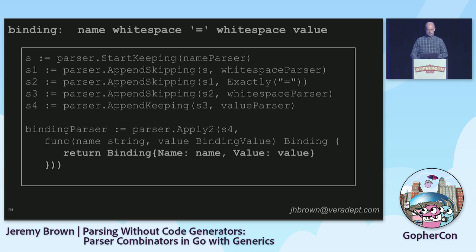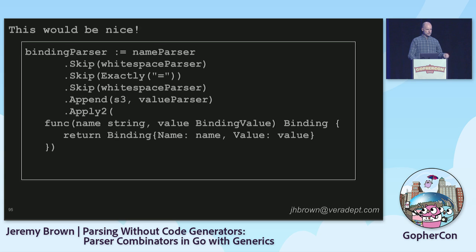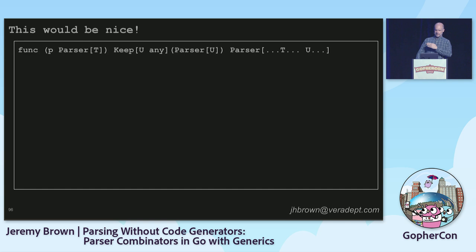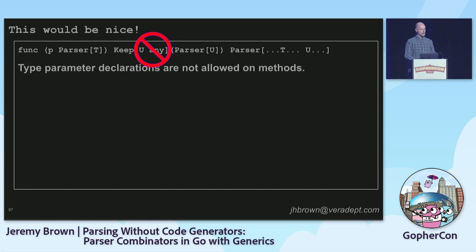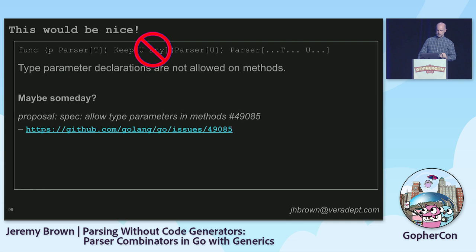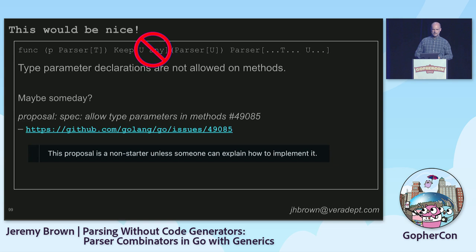This would be nicer if we could just dot our way along: parser.skip.skip.skip.append.apply. But that would require methods with type parameters on them. That's not allowed in the current implementation of generics. There is at least one active proposal, but the dispositive comment remains that it has not really been explained how to implement it, especially in the context of reflection concerns. So for now, we're stuck with our temporaries.